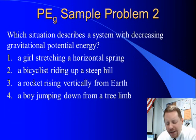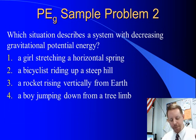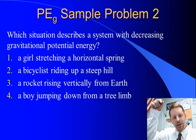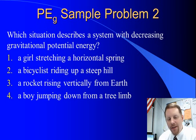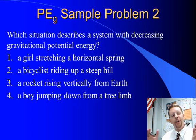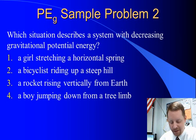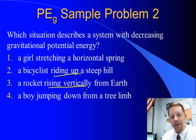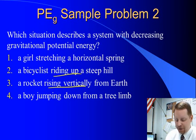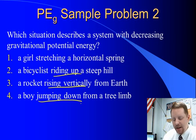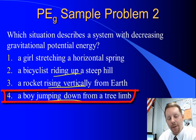Which of these situations describes a system with decreasing gravitational potential energy? A girl stretching a horizontal spring involves elastic potential energy. A bicyclist riding up a steep hill and a rocket rising vertically both have increasing gravitational potential energy. The only situation with decreasing gravitational potential energy is when height decreases — a boy jumping down from a tree limb. So the correct answer is number four.